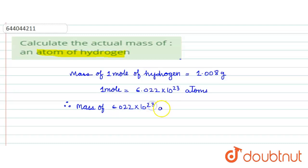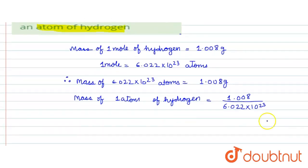Therefore, mass of 6.022 into 10 to the power 23 atoms is equals to 1.008 gram. Hence, mass of one atom of hydrogen is equals to 1.008 divided by 6.022 into 10 to the power 23. So on calculating, the answer comes out to be 1.66 into 10 to the power minus 24 grams.